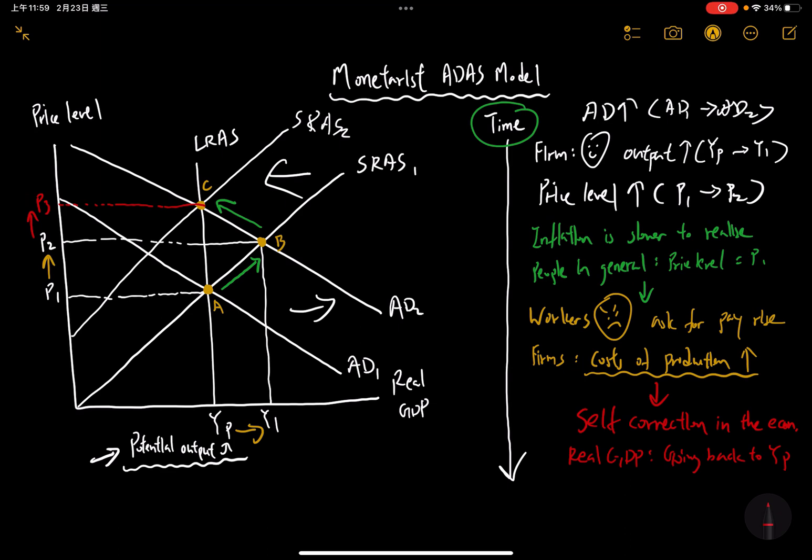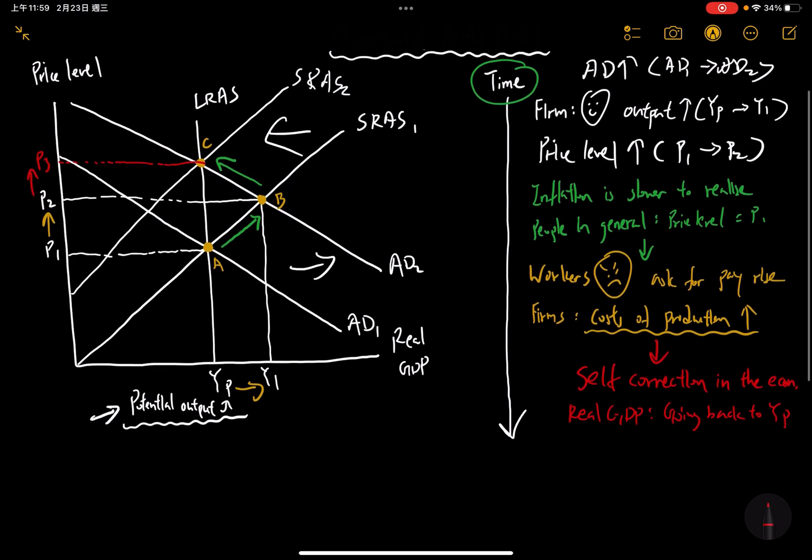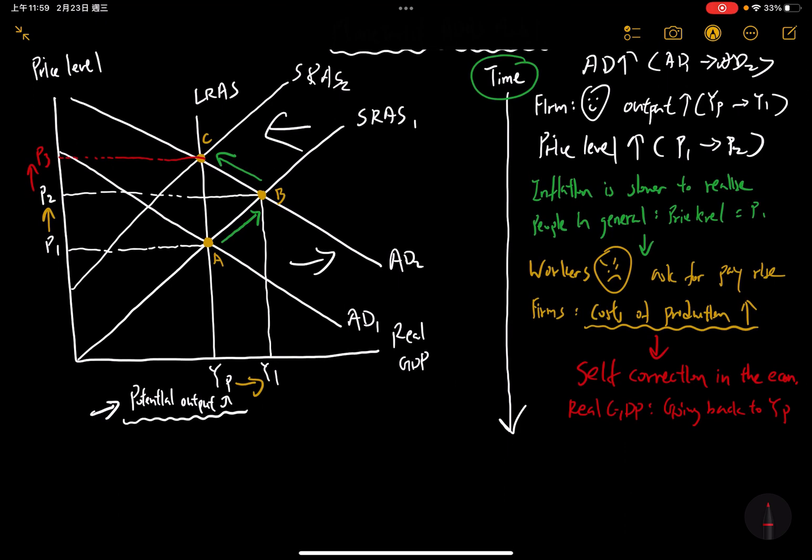This part is the most important part, so listen to this. The monetarists, they believe, if there's nothing else, if the economy is already running at a very optimal level, then we shouldn't do anything extra, especially when it comes to government intervention in order to change the AD.